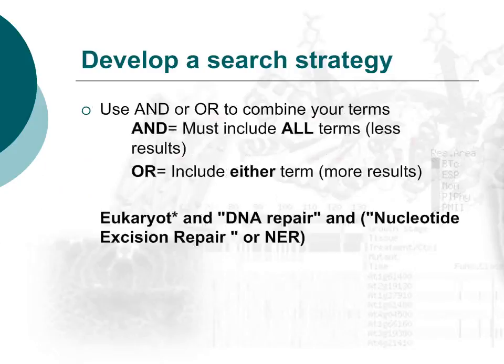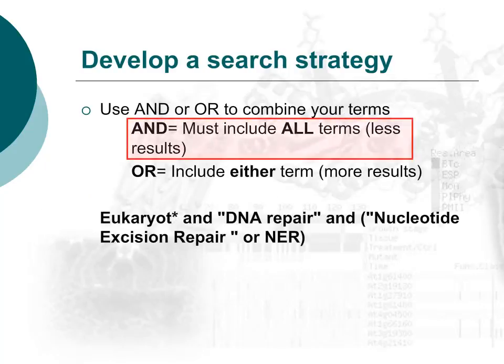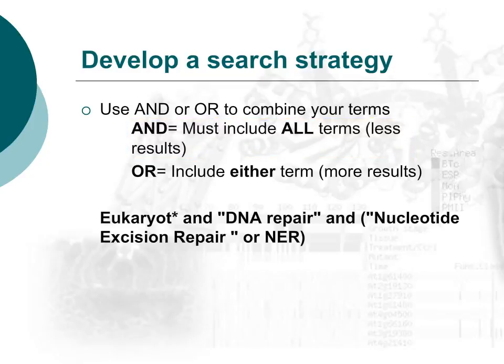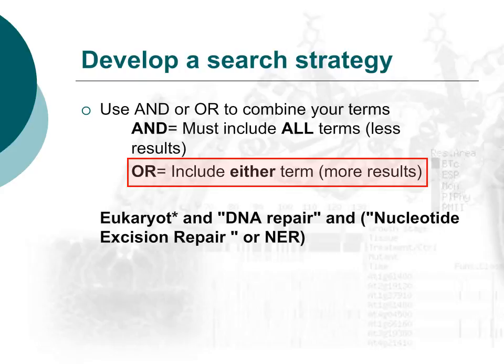You can also combine your search terms and phrases using Boolean logic. If you combine your search terms using AND, your results will have to include both search terms — you will get fewer results. If you combine your search terms using OR, your results will only have to include one of your search terms, and you will retrieve more results.